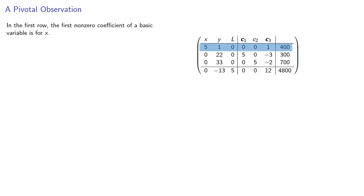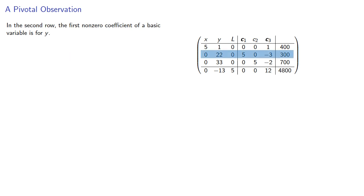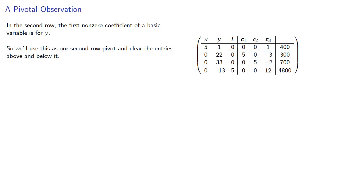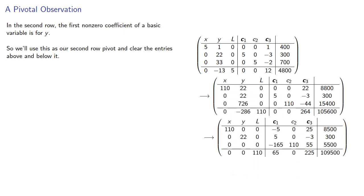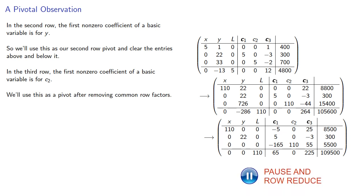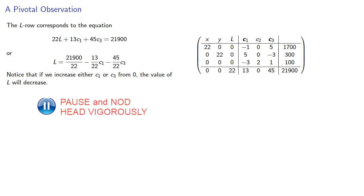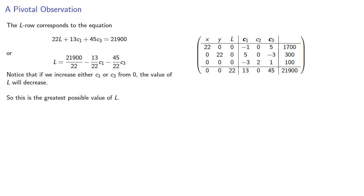So now we pivot. In the first row, the first non-zero coefficient of a basic variable is for x, so we use this as our first row pivot and clear out the entries below. In the second row, the first non-zero coefficient of a basic variable is for y, so we use this as our second row pivot and clear entries above and below it. In the third row, the first non-zero coefficient of a basic variable is for c2, and we use this as a pivot after removing common row factors. Now we see that the l row corresponds to an equation, and notice that if we increase either c1 or c3 from 0, the value of l will decrease. So this is the greatest possible value of l, occurring when x equals 1720 seconds and y equals 320 seconds.